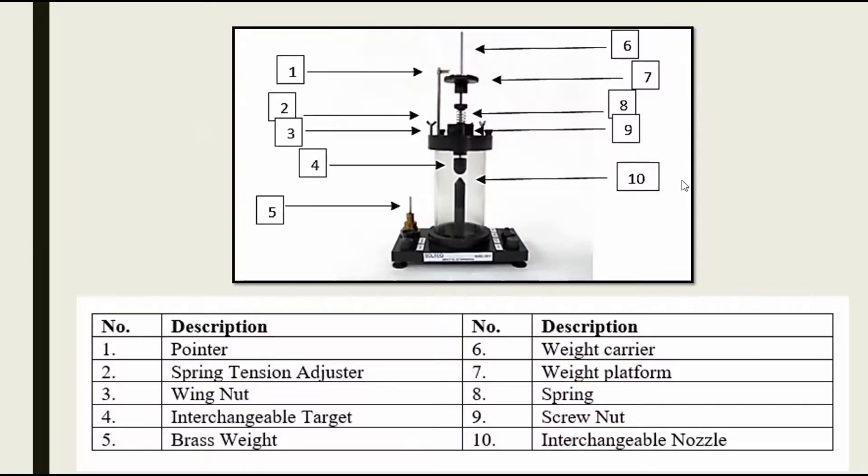As you can see, this is the apparatus for impact of jet. The first one is the pointer, second is the spring tension adjuster, third is the wing nut, and fourth is the interchangeable target, which I will be explaining later on.